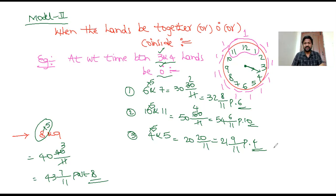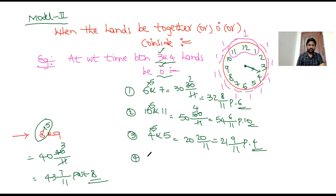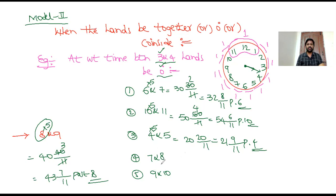With practice, you can get the answer within 10 to 15 seconds. Try practice problems: between 7 and 8 o'clock — 7 × 5 = 35, 35/11 gives 38 2/11... wait, that's 1 time: 38 2/11. Between 9 and 10 — 9 × 5 = 45, 45/11 gives 43 7/11. Now moving to Model 3.